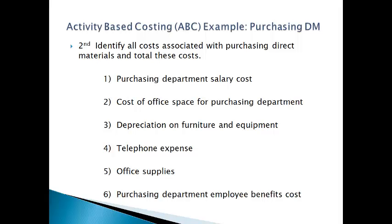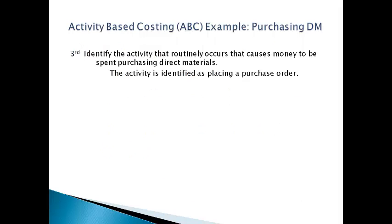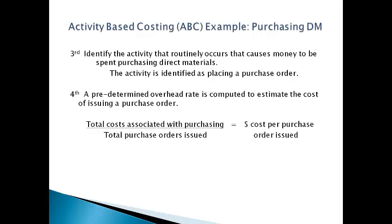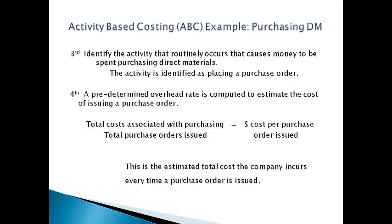The next step is to identify all the costs that are incurred to support the activity. All costs related to purchasing department employees and the facilities used by these employees are included in the cost pool. The next step is to identify the activity that causes these costs to be incurred. The activity in this example is issuing a purchase order. The total dollars in the purchasing cost pool are divided by the total number of purchase orders issued during the period. This gives the average cost every time a purchase order is issued.